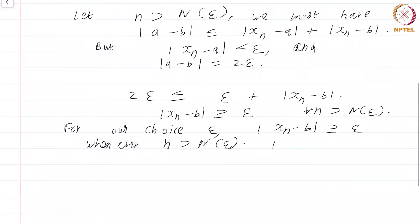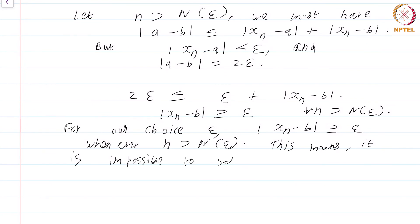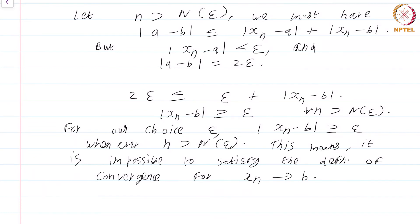This means it is impossible to satisfy the definition of convergence for x_n converging to B. For this choice of epsilon, I can never find an N(epsilon) such that if n is greater than N(epsilon), |x_n minus B| is less than epsilon. That is simply not possible because after a particular stage — more precisely our choice N(epsilon) — the sequence is always at least epsilon distance away from the point B. So the definition can never be satisfied for x_n converging to B.